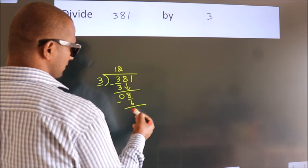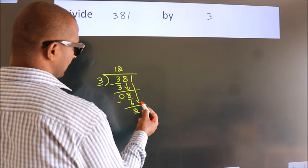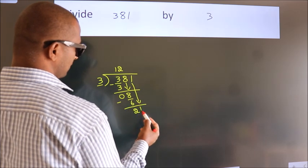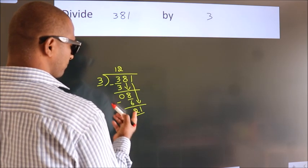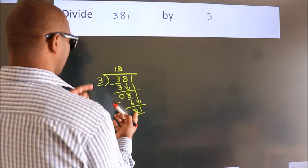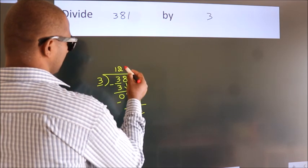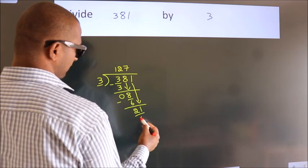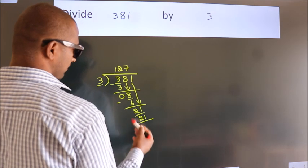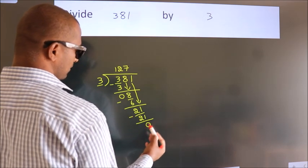After this, bring down the beside number. So 1 down. So 21. When do we get 21? In the 3 table. 3 times 7 is 21. Now we subtract. We get 0.